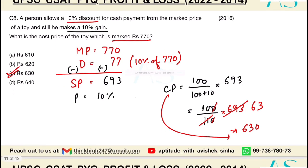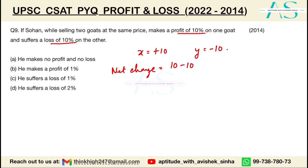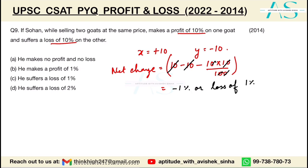Last question: Using the successive change formula, x = +10 (profit), y = −10 (loss). Net change = 10 − 10 + (−10×10)/100 = −1 percent, so ultimately a loss of 1 percent. That is the correct answer. See you all in the next video, take care, bye!